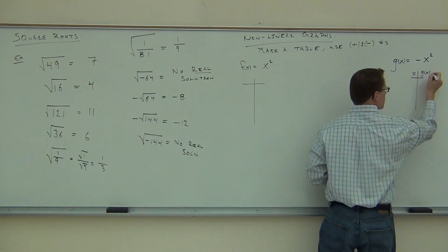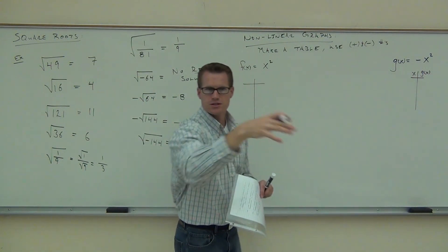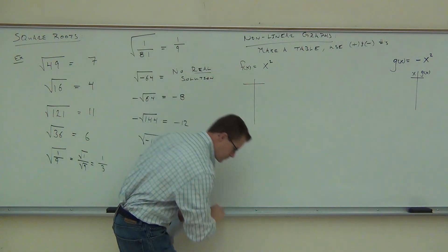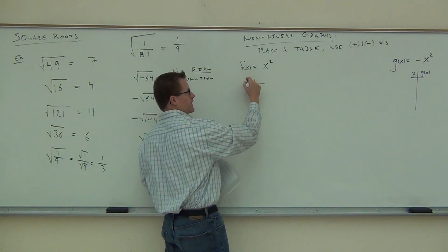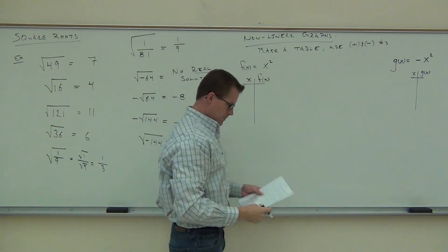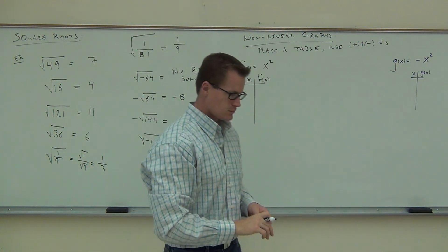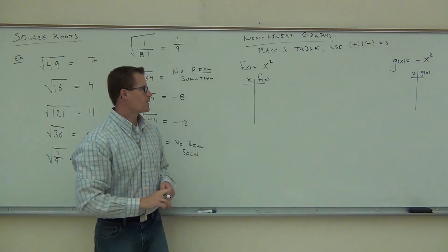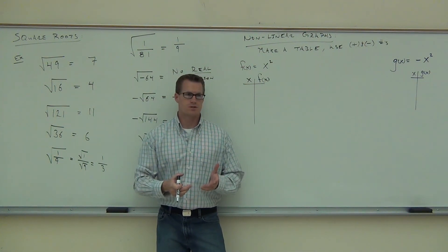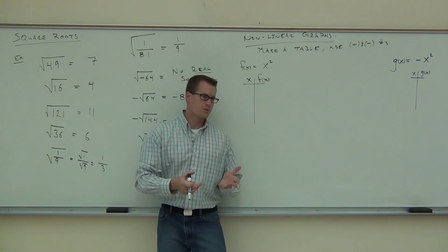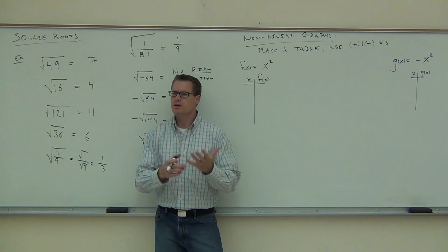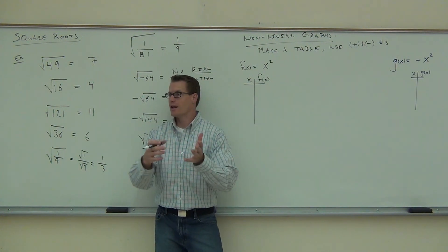G of X and F of X — the X's are what you put in, and the G of X's or F of X's are what you get out. Because these graphs aren't straight, you need more than two or three points to graph them. We're going to choose five points to graph, because we don't really know these shapes anymore, at all.